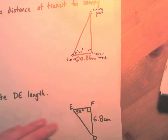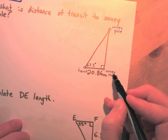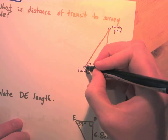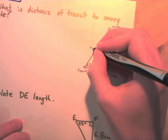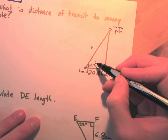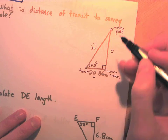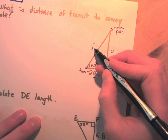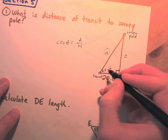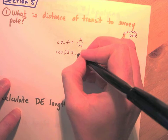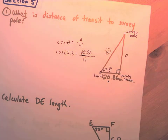Moving on to section five: what is the distance from transit to survey pole? It's just a triangle question asking for the distance from one point to another. We're given an angle and a side length. H is straight across from the right angle, O is opposite, A is adjacent. We want to find H, and we have A, so we'll use cosine.